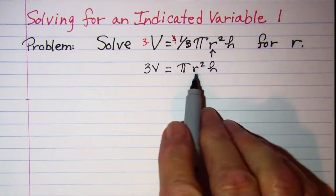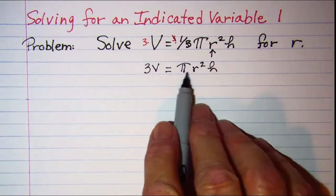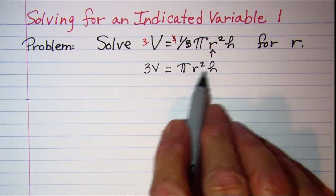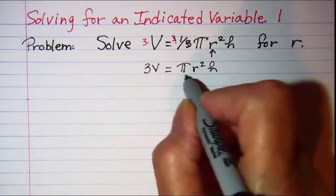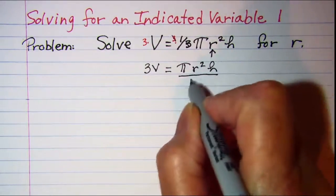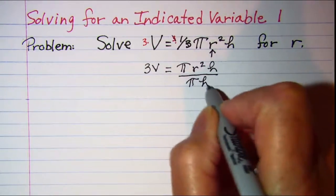And remember I'm solving for r, so let's remove the pi and the h. Since they're multiplied I can divide both sides by pi times h.